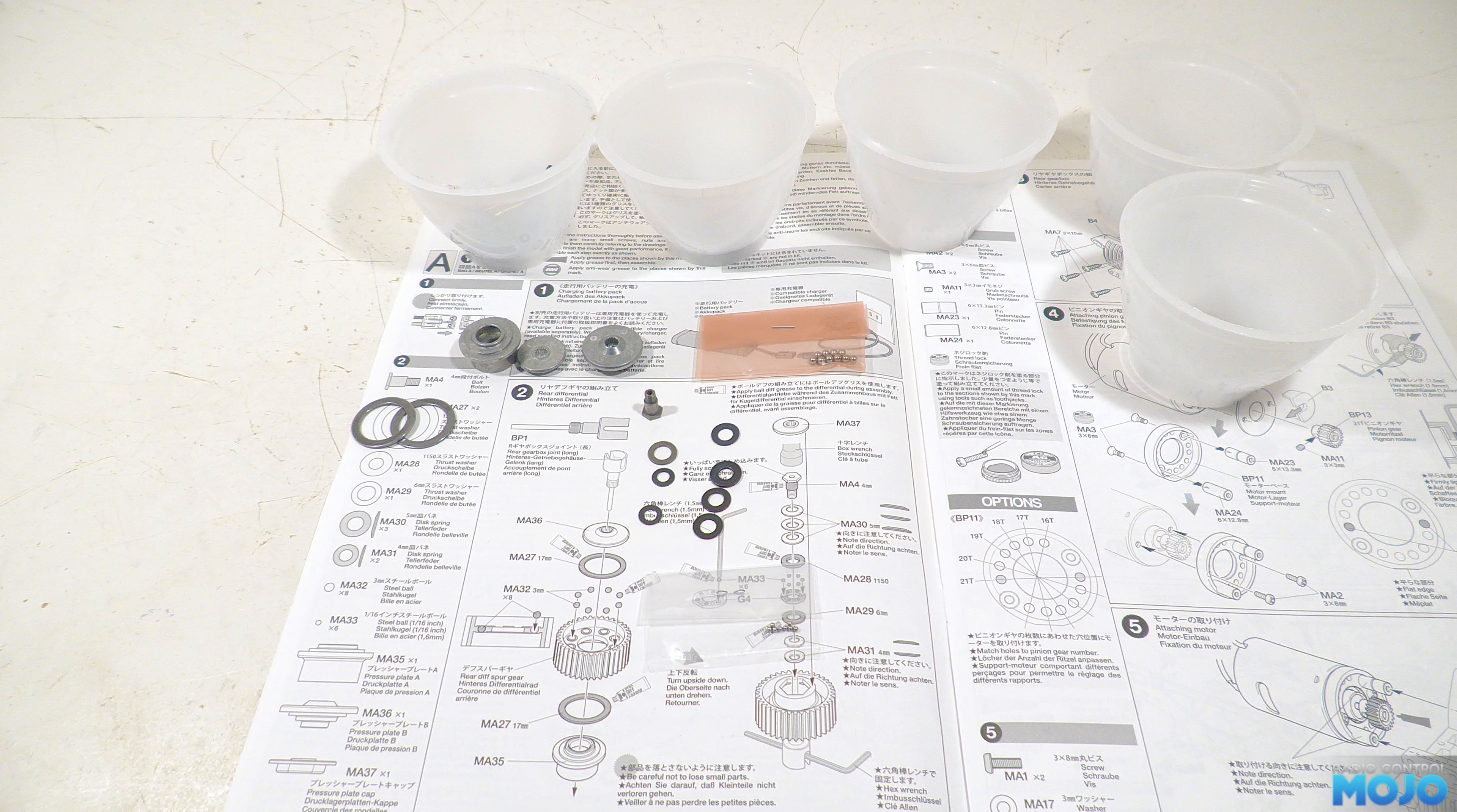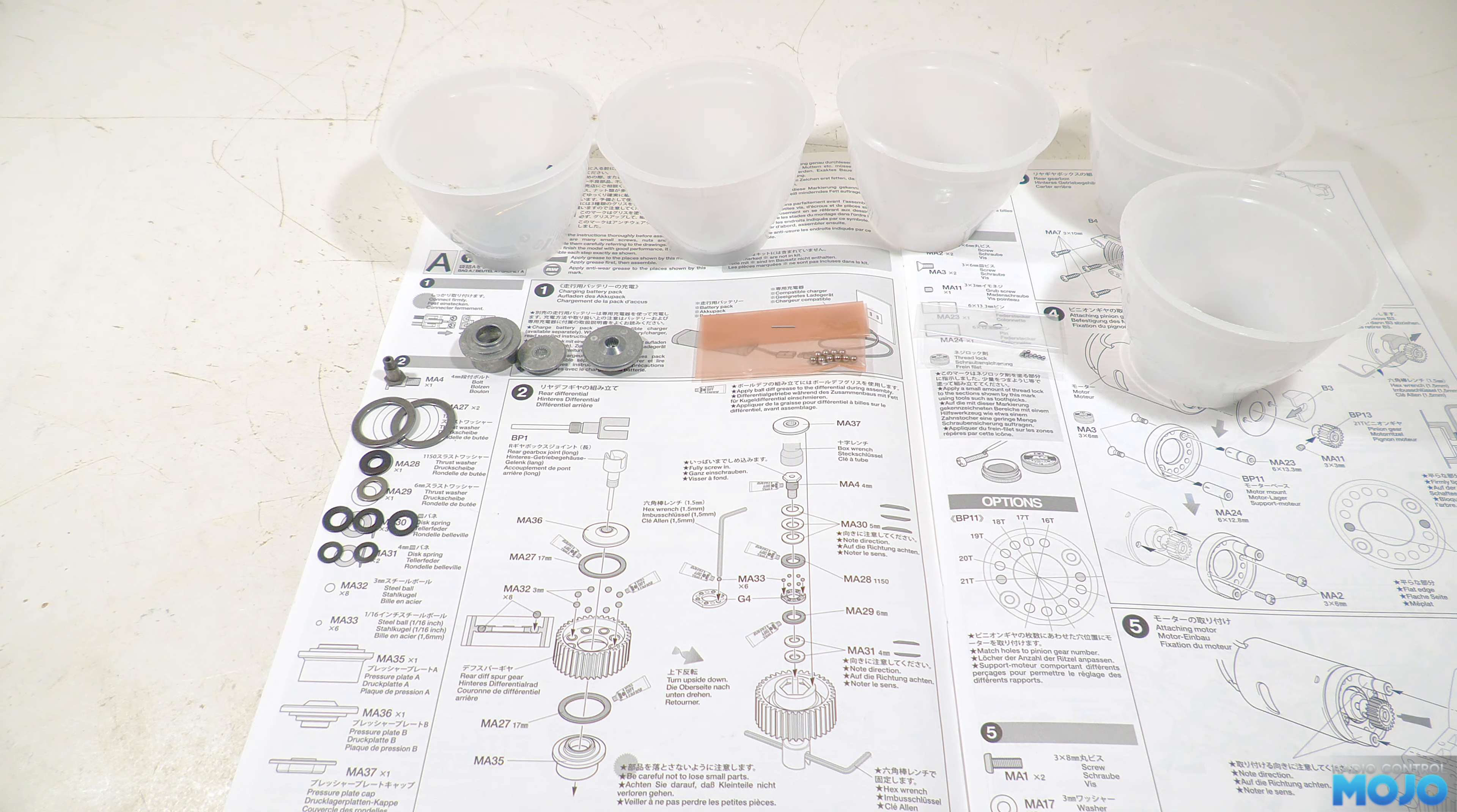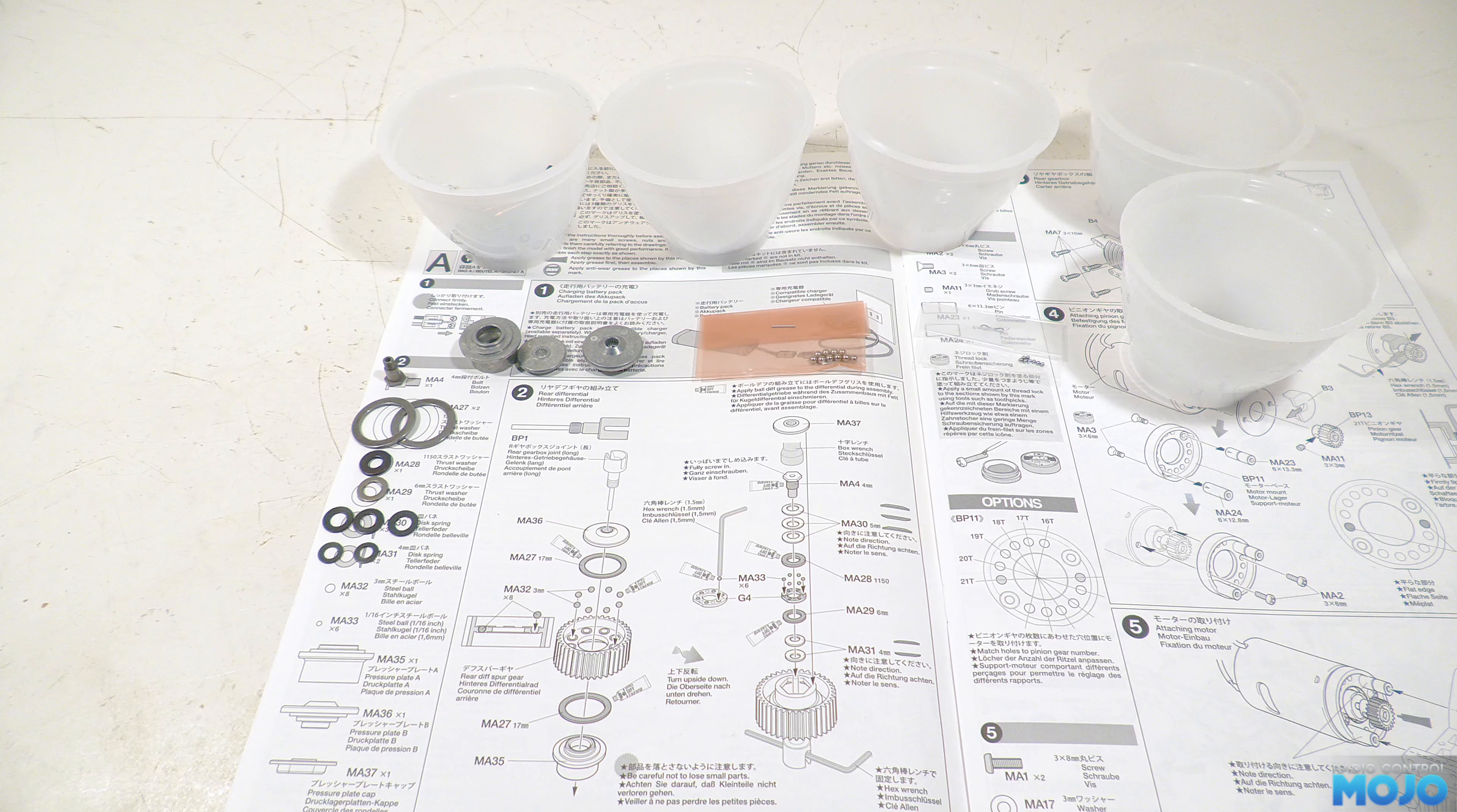We need two thrust washers, the chunky step screw with a hex head, a large thrust washer, a small thrust washer, three 5mm disc springs, which are essentially washers but they're slightly cone shaped, two 4mm disc springs, the balls, eight of the 3mm ones and six of the 1/16th inch ones, and we'll keep those in the bags for now so they don't get lost.